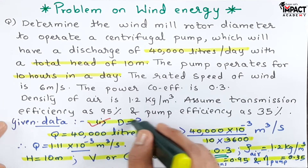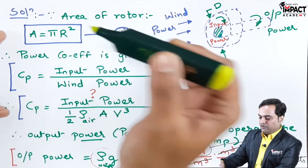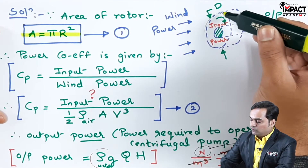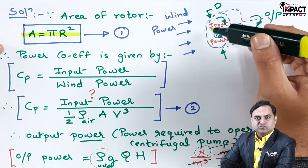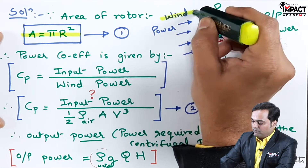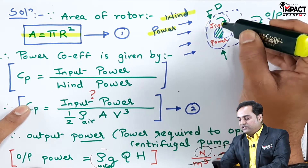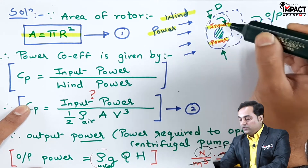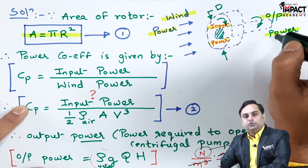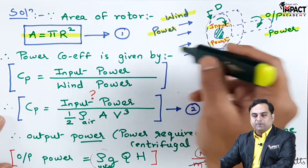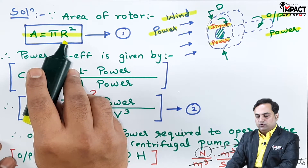We need to find the diameter of the rotor. The area of the rotor is given by A = πr², since the rotor is circular with diameter D. This is equation 1. When wind flows, it rotates the rotor — wind power is converted into input power, which is the power available at the rotor. This power is then transferred via the shaft as output power.